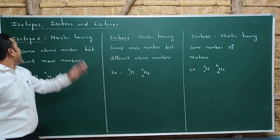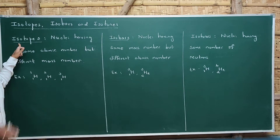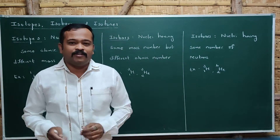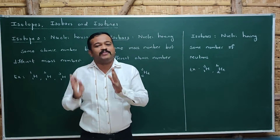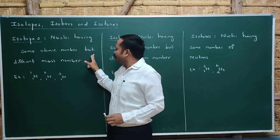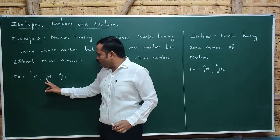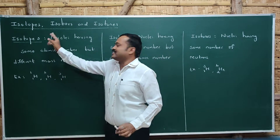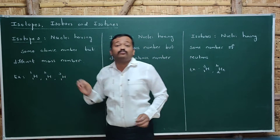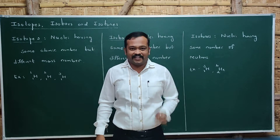Now let us move on to isotopes, isobars, and isotones. Isotopes — 'iso' means same, 'tope' means place — these nuclei occupy the same place in the periodic table, meaning they are the same element. Isotopes are nuclei having the same atomic number but different mass numbers. For example, H-1, H-2, and H-3 are isotopes of hydrogen — these are hydrogen, deuterium, and tritium respectively. Same atomic number but different mass numbers.